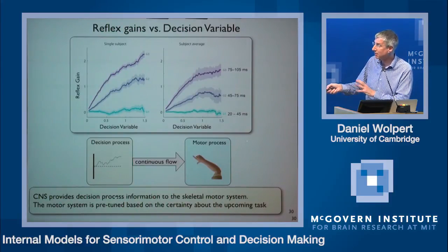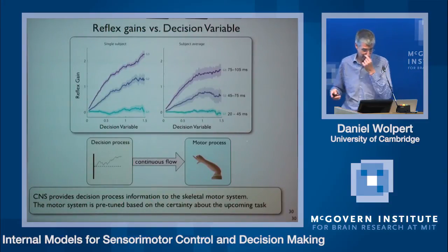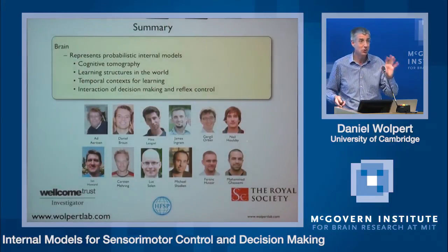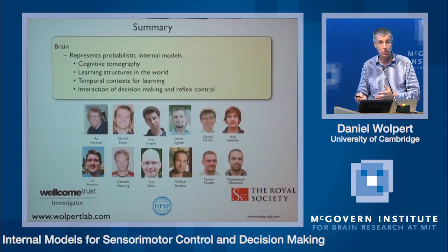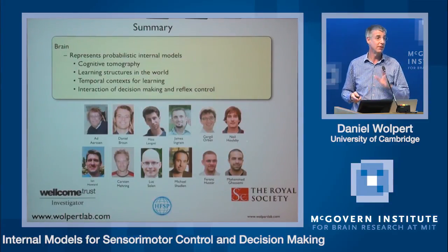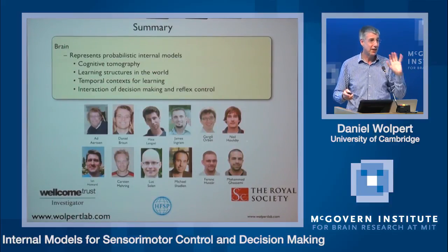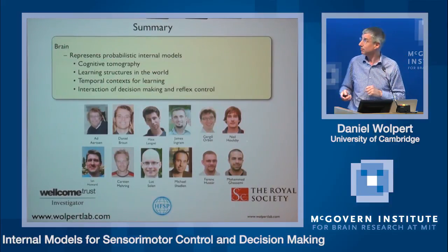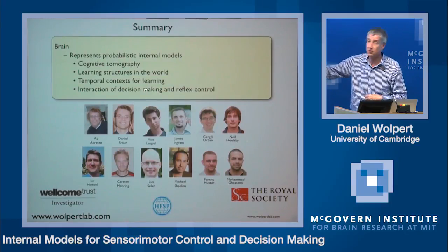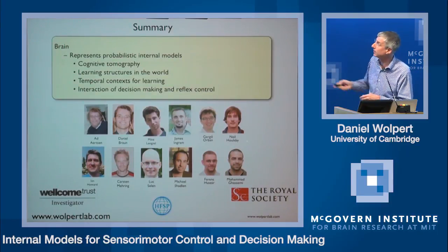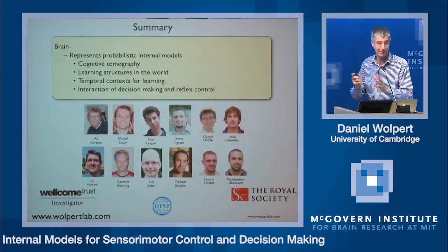In summary, I hope I've convinced you that the brain represents probabilistic internal models. Cognitive tomography is a useful technique to extract high-dimensional representations, suggesting that even for well-learned tasks like face recognition we have generative models. Learning structures in the world is important, temporal contexts are vital for accessing different memories, and there's a strong interaction between decision-making and reflex control. I'd like to thank all my collaborators and funders, and thank you for your time.